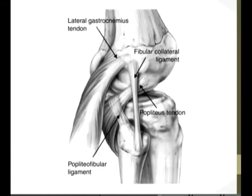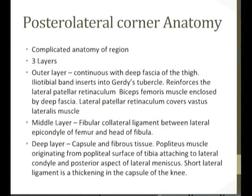Reviewing the anatomy: there are three layers of the posterolateral corner. The outer layer is composed of the iliotibial band, the lateral patellar retinaculum, and the biceps femoris muscle. The middle layer is the fibular collateral ligament between the lateral epicondyle of the femur and the head of the fibula. The deep layer consists of the capsule and fibrous tissue, with ligament thickening of the capsule visible in that picture.